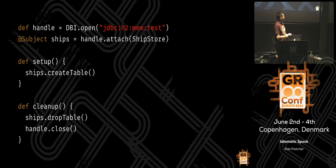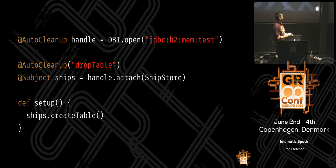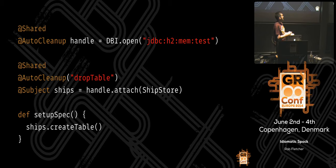If you have objects that need expensive cleanup — like calling a drop-table method or closing a resource — you can use Spock's `@AutoCleanup` annotation. It will by default look for a `close` method, or you can tell it which method to call. That way you can do away with the cleanup block. You can use it on shared things too, and it will run as a cleanup step at the end of all the tests.